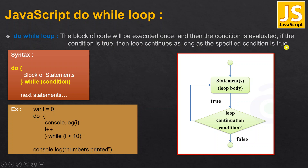After executing at least once, the condition will be evaluated. If the condition is true, then the loop continues as long as the specified condition is true. The syntax is: do, then we start the block of statements, and then we check the condition — we place the condition at the end of the block, like: while(condition). Then the next statements follow.